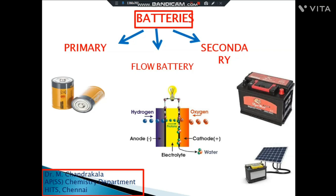Flow batteries produce electricity as long as we provide the reactants. If we stop providing the fuels or reactants, they will also stop providing energy. Such batteries are known as flow batteries — as long as the reactants flow into the battery, they will produce electricity.